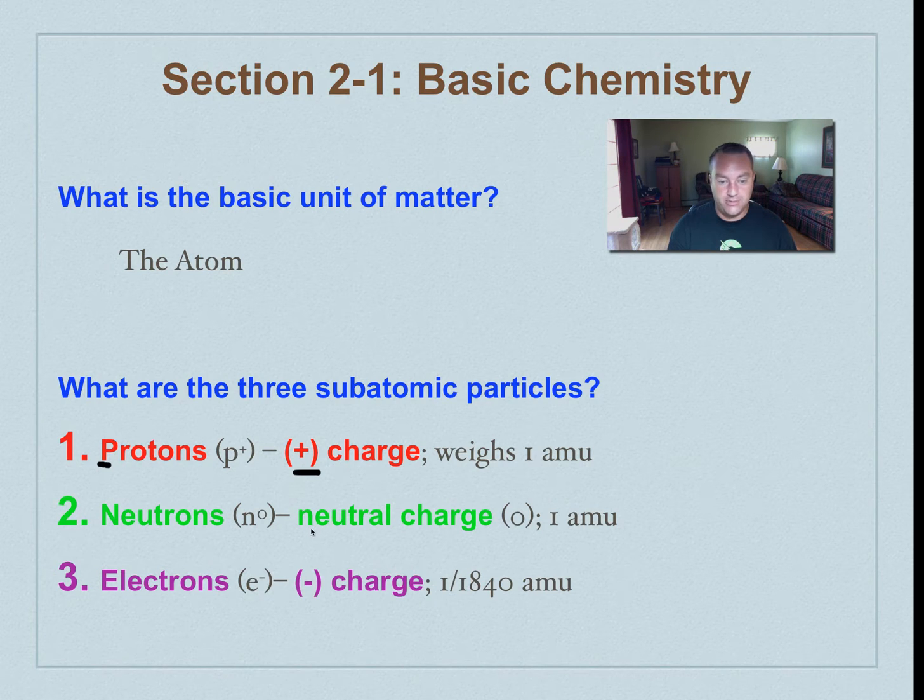The next subatomic particle is the neutron. And if you look at the first five letters of neutron, it matches up with neutral, because they have no charge. So this is what the zero over here means. It means it has no charge, it's simply neutral. And it weighs the same as a proton. The third subatomic particle is the electron. These guys have a negative charge, so we use the symbol E minus. And these guys weigh basically nothing, but they do weigh something. They weigh 1/1840th of an atomic mass unit.